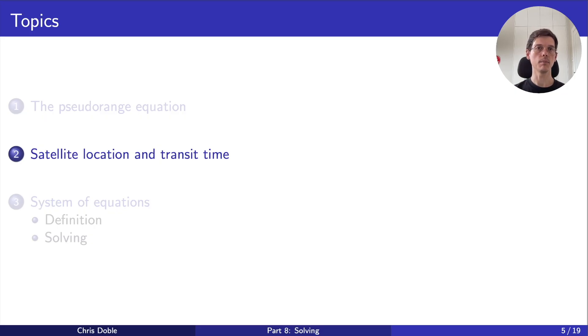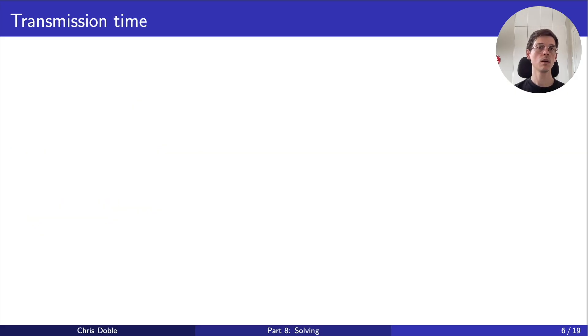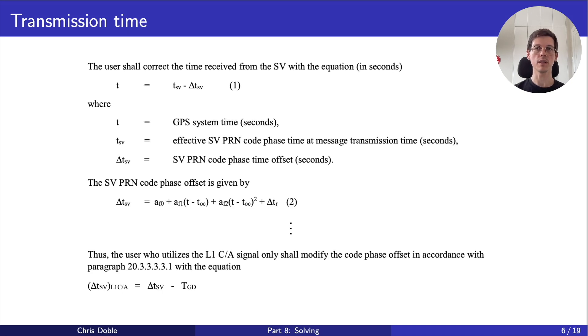Let's start with the transit time. Now that the pseudorange equation is accounting for our clock bias, we really can just subtract the transmission time from the reception time. Section 20.3.3.3.3.1 of the GPS spec tells us how to calculate the transmission time. We start with an initial estimate, TSV. From this, we subtract a value, delta TSV, that accounts for drift in the satellite's atomic clock and applies relativistic corrections.